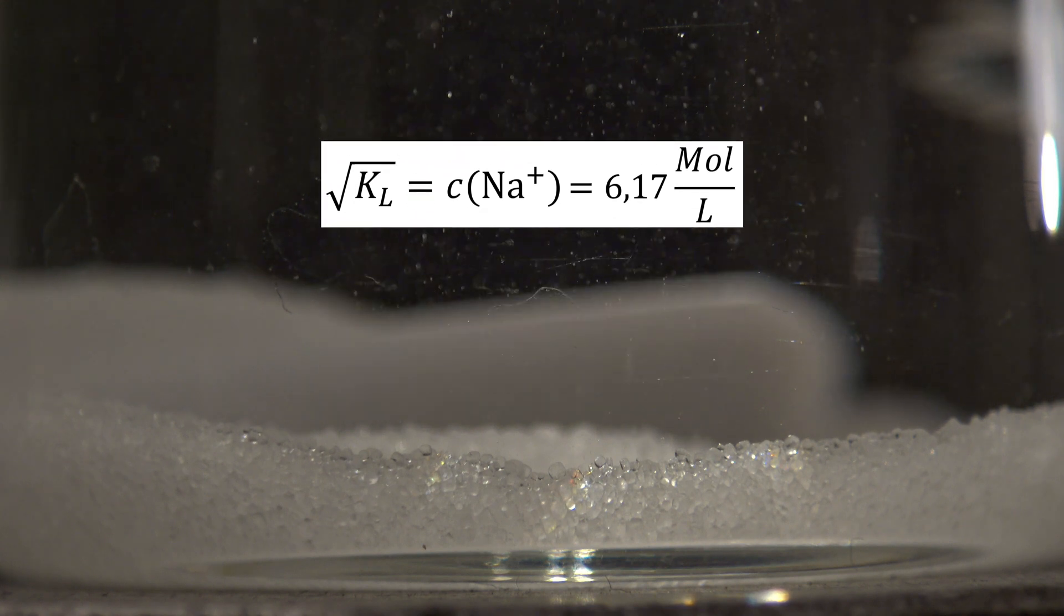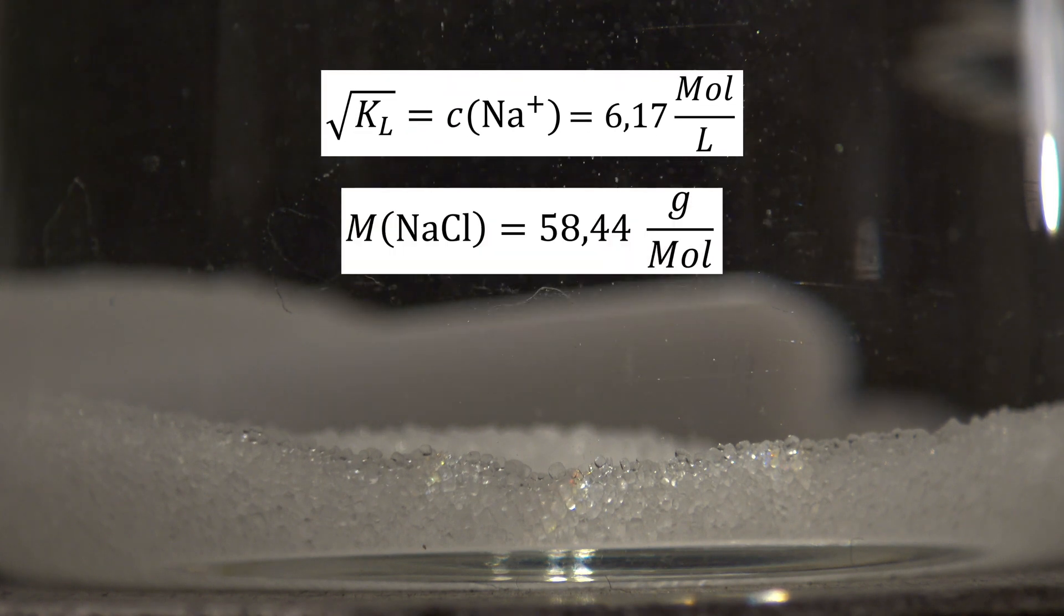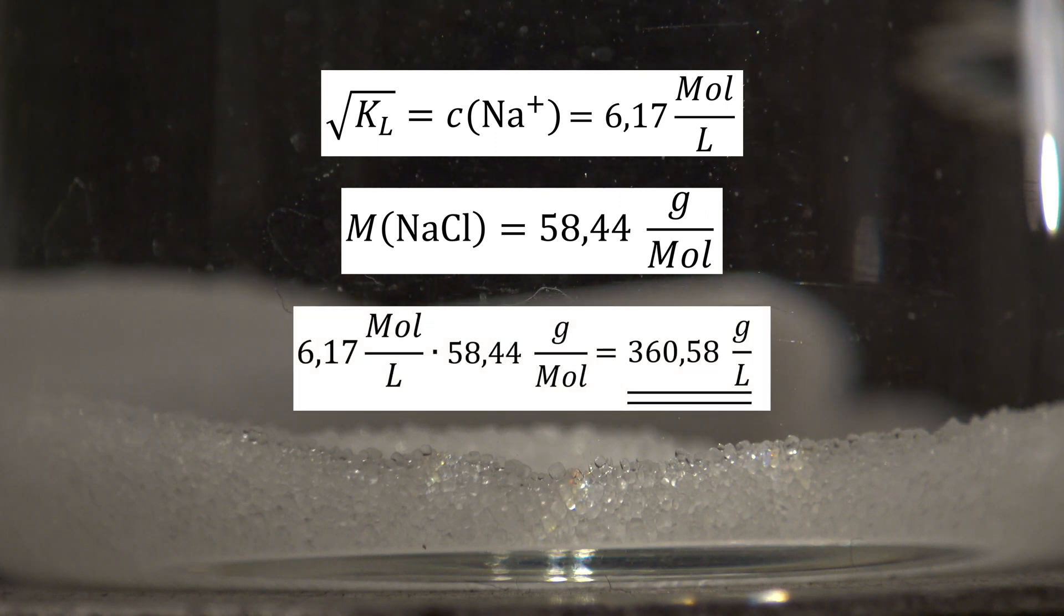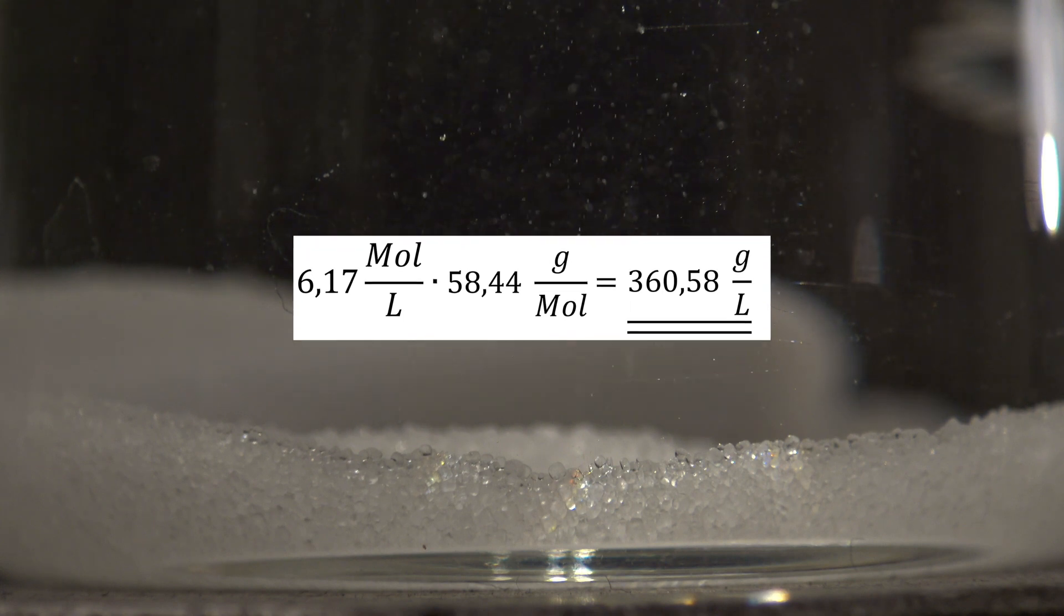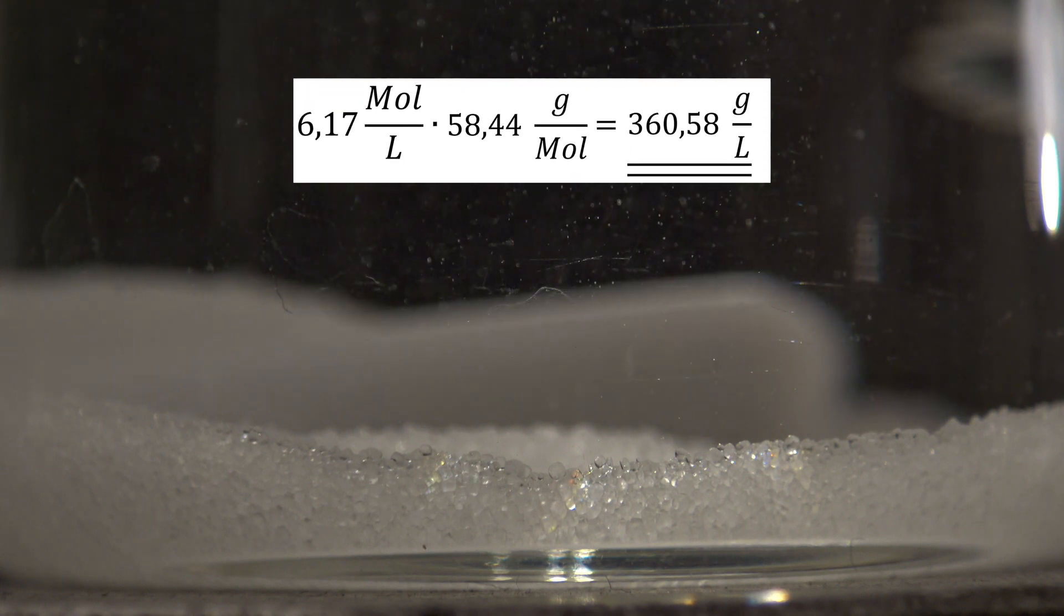When the concentration is multiplied by the molar mass of the compound, the concentration is calculated in grams per liter, which shows how many grams of the salt can be dissolved in one liter of solvent at 25 degrees Celsius.